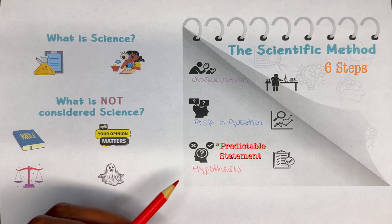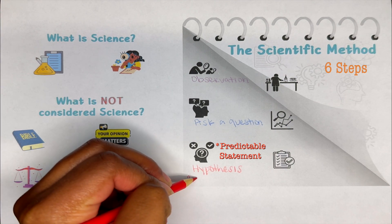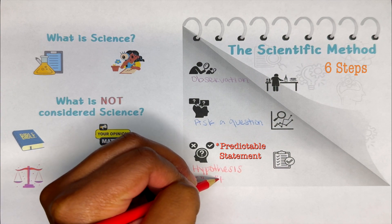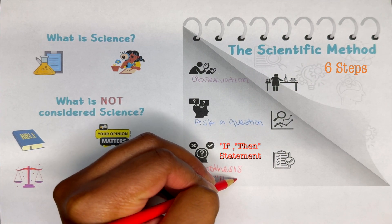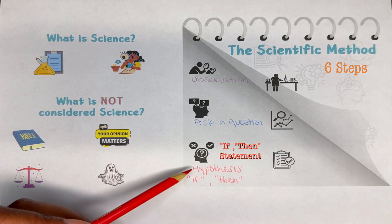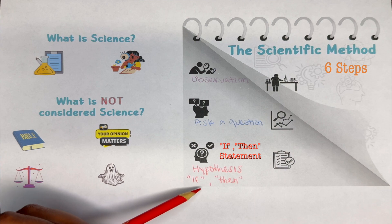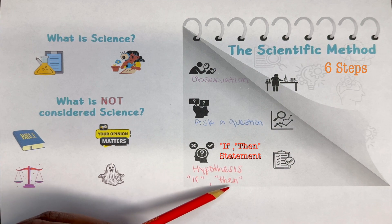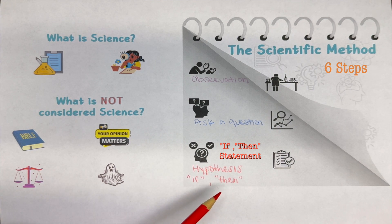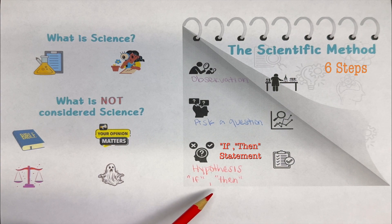When it comes to your hypothesis statement, you'll say: if I do this, then this should happen. So if you add something, take something away, or change something, then this should happen. It's a predictable statement — a predictable answer that we can actually run a test on.